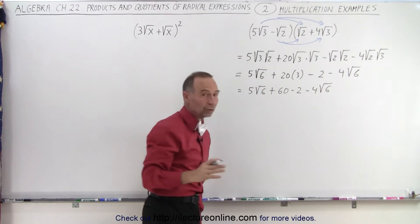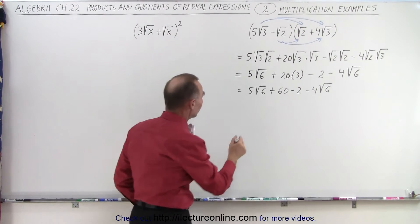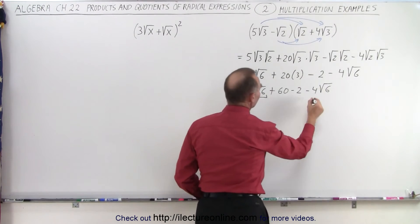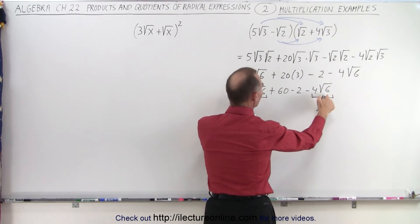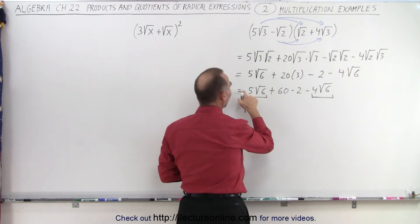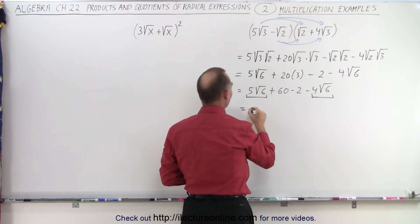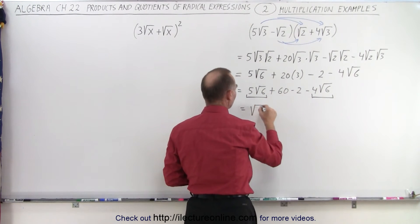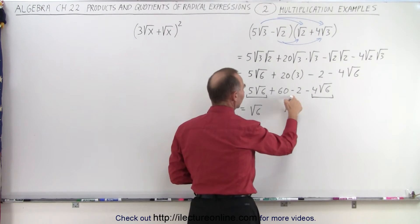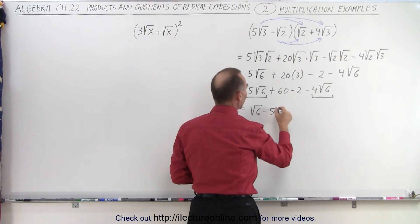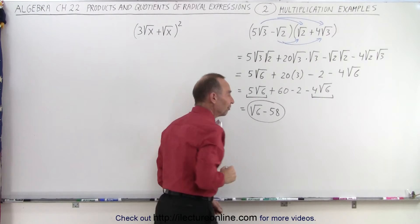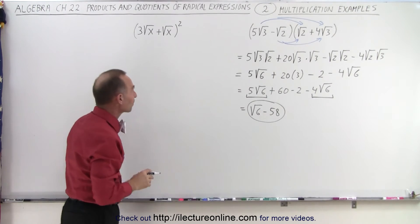And now we're going to combine like terms. Notice that these are like terms because they both contain the square root of six — five minus four, which is one times the square root of six, or simply the square root of six. And 60 minus two is 58. So the simplified form of that product is the square root of six plus 58.